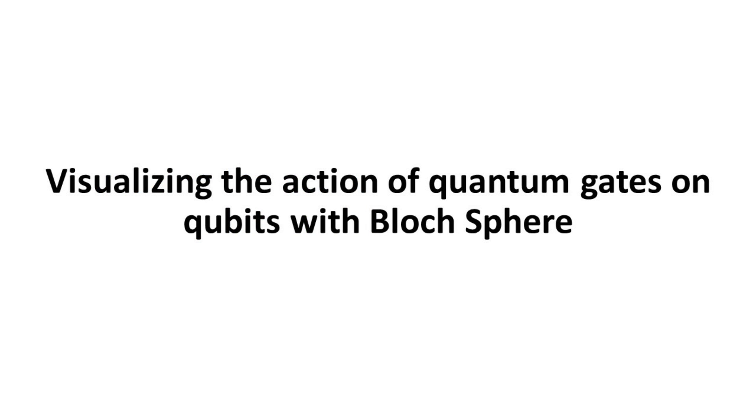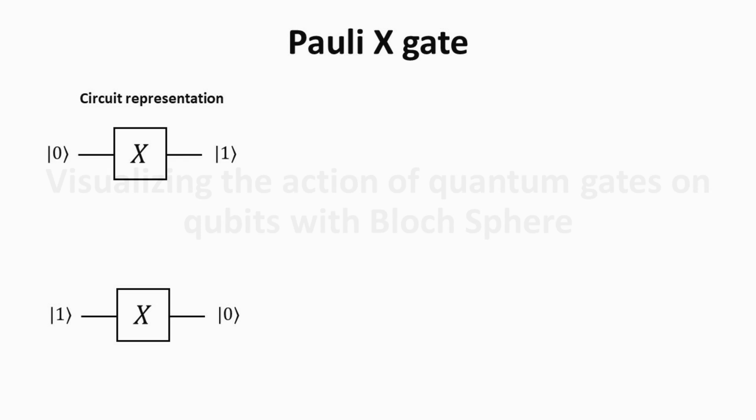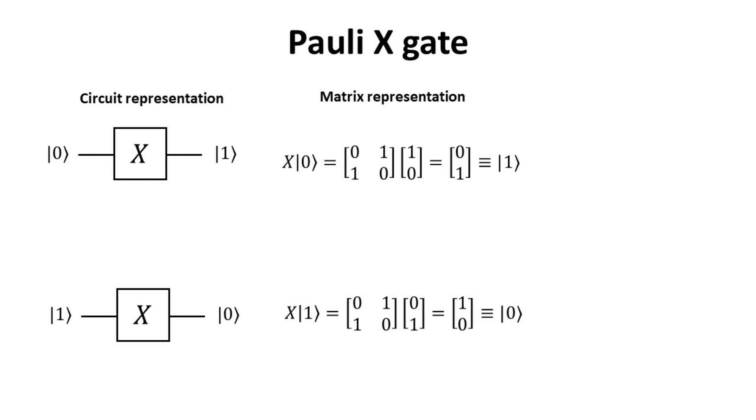Part 4. Visualizing the action of quantum gates on qubits with Bloch sphere. Armed with the Bloch sphere representation, let's explore the Pauli X gate operation on a qubit. We recall the matrix representation of the X gate, and its operation on zero and one kets.